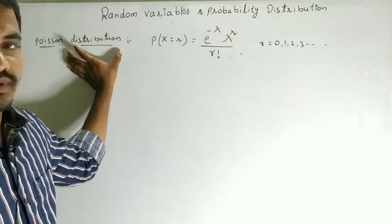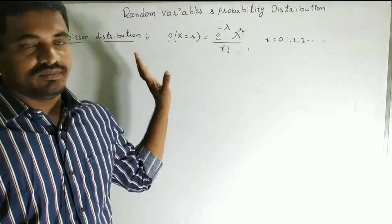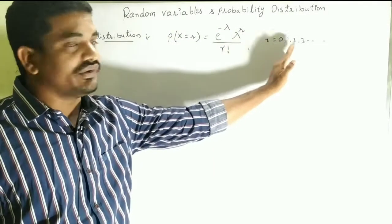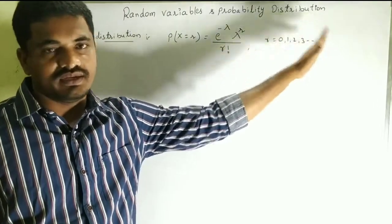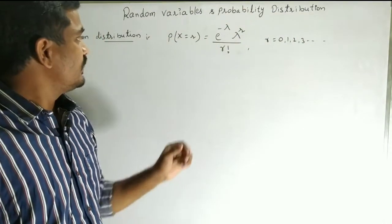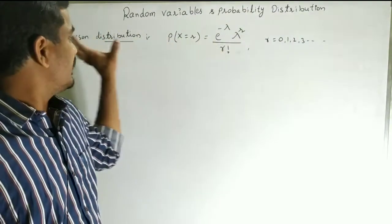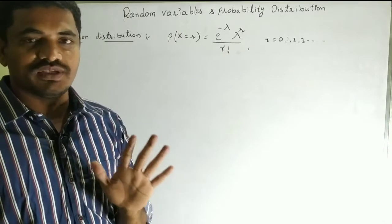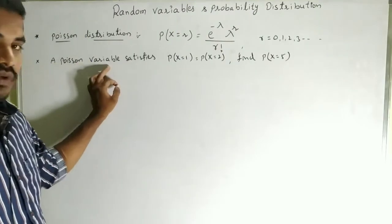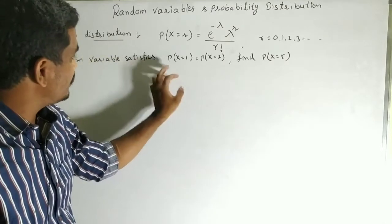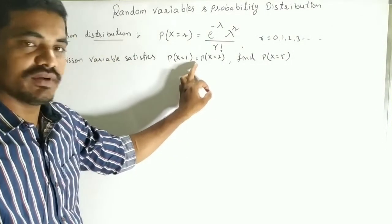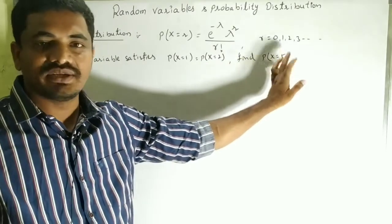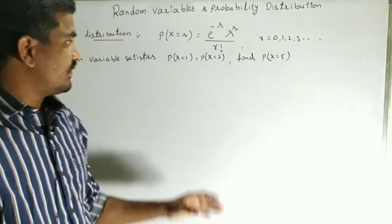Here r is the range variable. Now, when a Poisson variable satisfies P(X = 1) = P(X = 2), find P(X = 5).